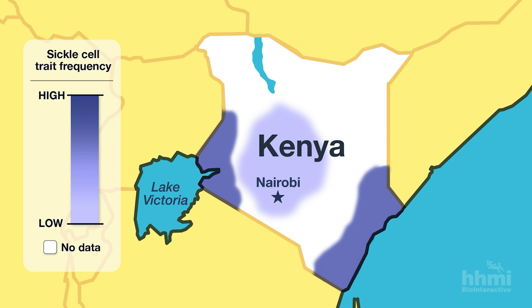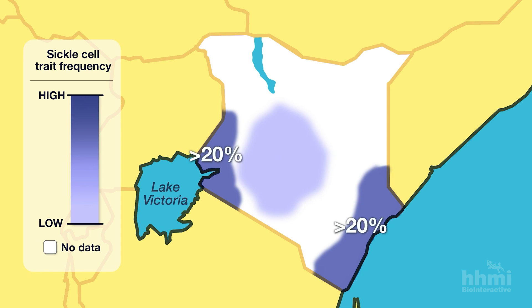In the lowlands, the sickle cell trait frequencies were over 20%, whereas in the highlands the frequencies were less than 1%. What could explain such dramatic differences between these regions? A childhood memory helped Tony make the connection.